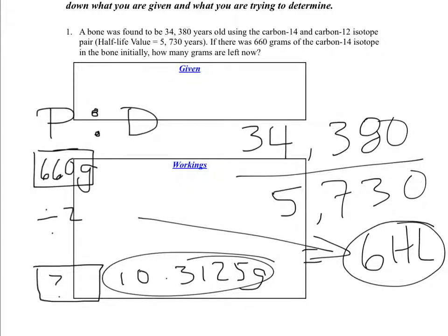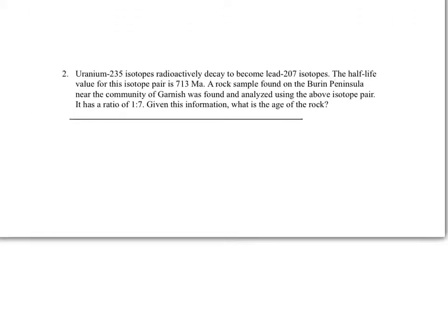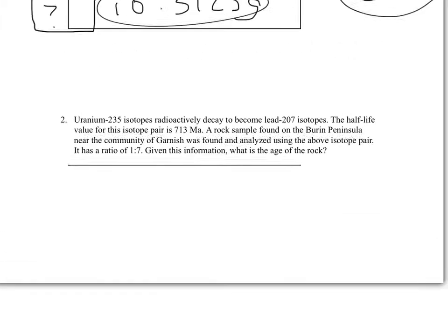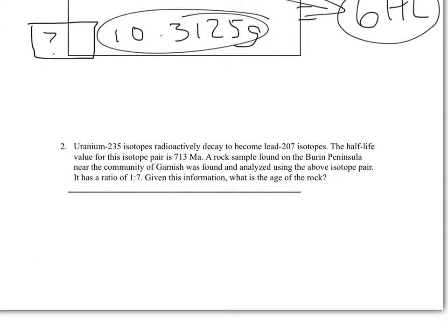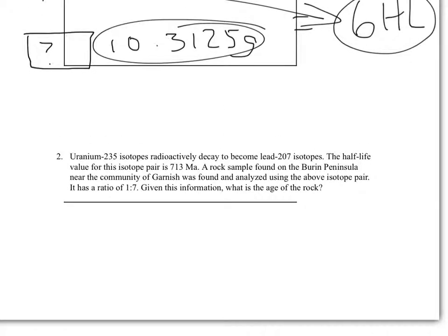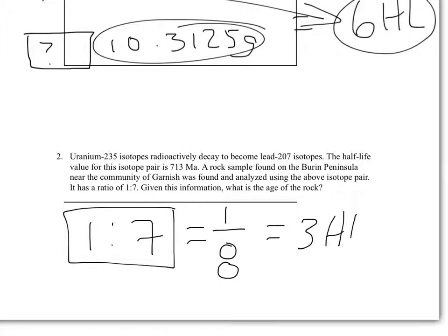So we'll move on to the next problem. This problem simply says uranium-235 isotopes radioactively decay to become lead-207. The half-life value is 713 million for this isotope pair. The rock was analyzed and it was found to have a ratio of 1 to 7. So without even reading the question, as soon as I see a ratio of 1 to 7, I know that one-eighth of the original parent remains in the rock. And that is a half, a quarter, one over eight. So that represents three half-lives.